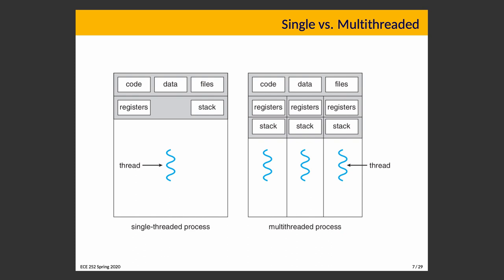Visually, in a single-threaded process there is one thread — threads are represented as squiggly lines — and the code, data, and files are shared. In a multi-threaded process, there are (in this case) three threads; each thread has its own stack and its own register data, but the code, data, and files are all shared.